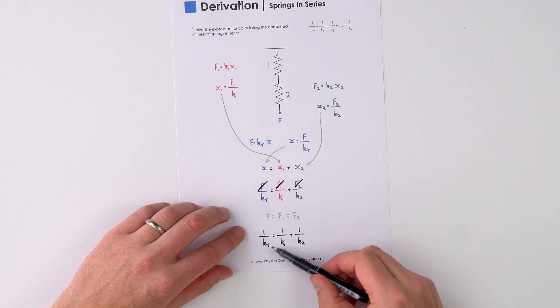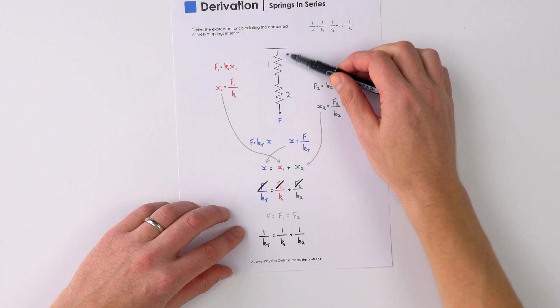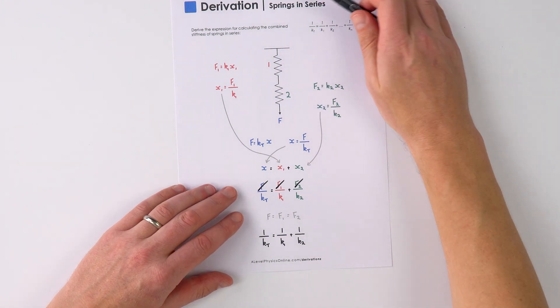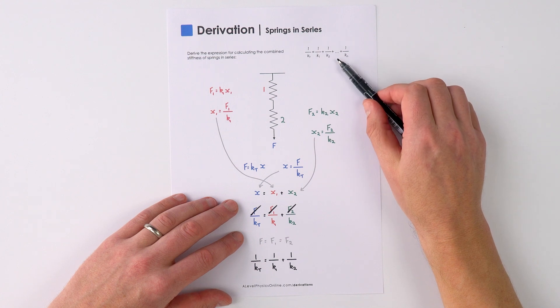And we can then say that 1 over kt is equal to 1 over k1 plus 1 over k2 if we have two springs in series, or if we had a number of springs in series we'd have the expression that we have up here.